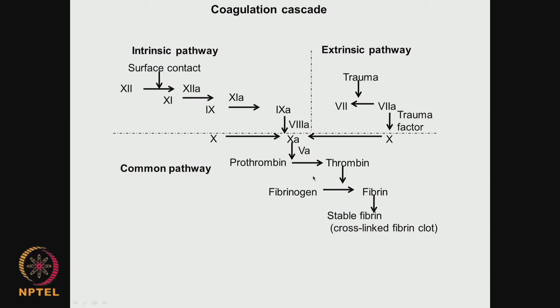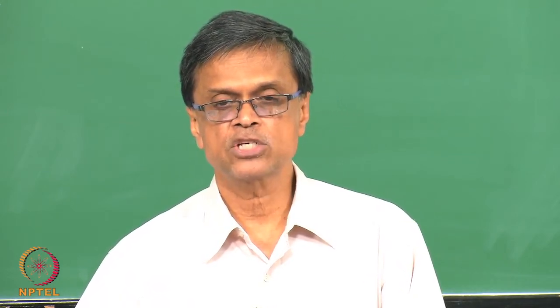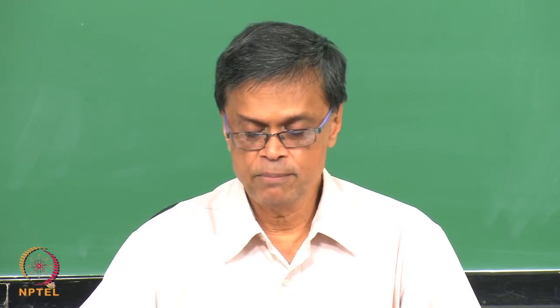Thrombin is the main enzyme that converts fibrinogen to fibrin, forming stable fibrin — the blood clot. Formation of blood clots is very important for the survival of a human being. If blood does not clot, there could be continuous oozing and the person can lose blood and go into shock. Especially people with cardiovascular problems are given drugs like warfarin or aspirin, which help in thinning of blood — but those people can have problems with blood loss if they are injured.